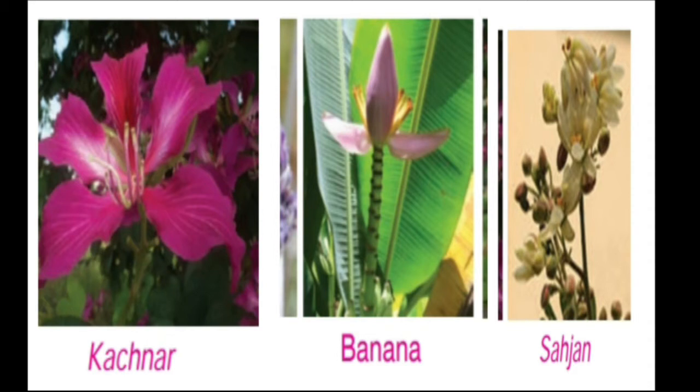As you can see here the flower of Kachnaar, Banana and Sahajan. These three flowers are the examples of those flowers which can be cooked and eaten as a vegetable.